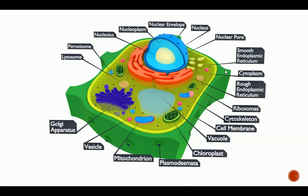This is a 3D version of the plant cell which clearly shows how its structure looks. The nucleus is cut open to show the nucleolus inside. The nucleoplasm is the liquid surrounding the nucleus. We have the nuclear envelope and the nucleopores — the points where things move in and out of the nucleus. The smooth endoplasmic reticulum has no ribosomes on it, while the rough endoplasmic reticulum has ribosomes on it. The cytoplasm is everything inside the cell except the nucleus.